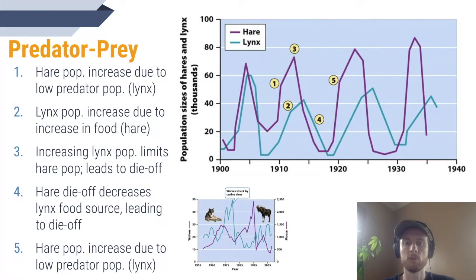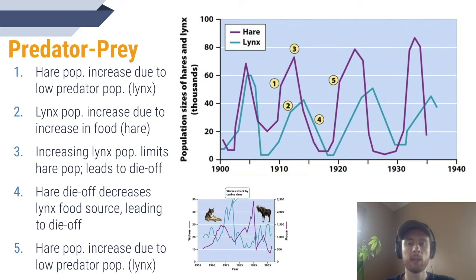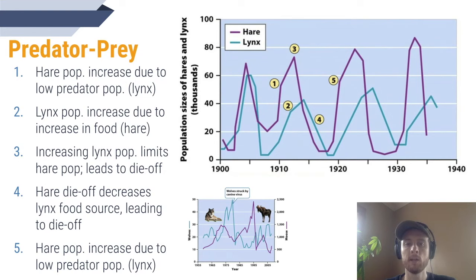Then in step two, we see the lynx population grow very rapidly because there's such an abundance of hare, which is their main food source. However, in step three, the lynx population has grown so rapidly that they start eating the hare faster than the hare can reproduce, leading to a crash in the hare population. Then in step four, the lynx population crashes as well, following that huge decline in their main food source. The carrying capacity for lynx has decreased dramatically because the limiting resource of food has decreased dramatically. And in step five, we start the whole cycle over again — the hare population grows in the absence of their main predator.